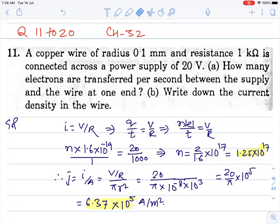Copper wire of radius 0.1 mm and resistance 1 kilo ohm is connected across a power supply of 20V. How many electrons are transferred per second between the supply and the wire at one end? So, Ohm's law V equals IR and I equals V by R.